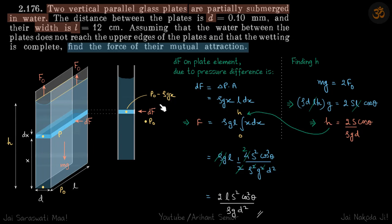Outside pressure is of course P naught, so delta P is rho gx.